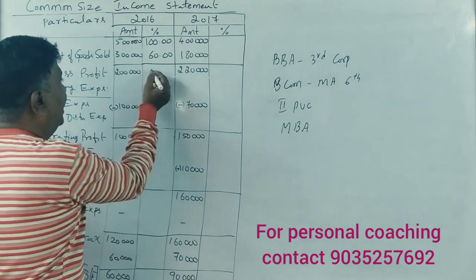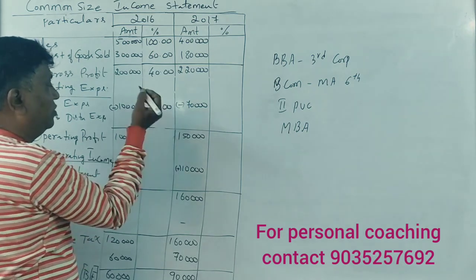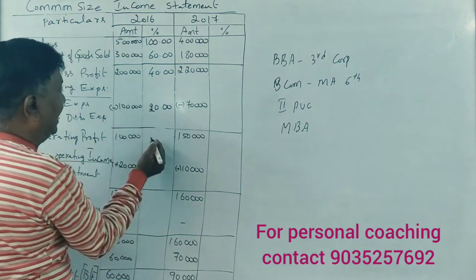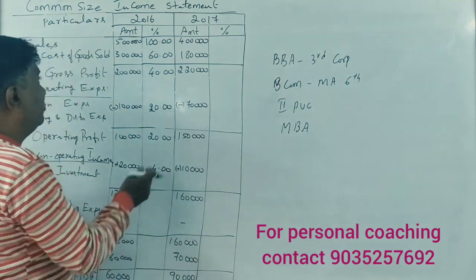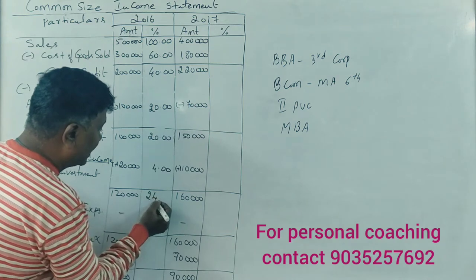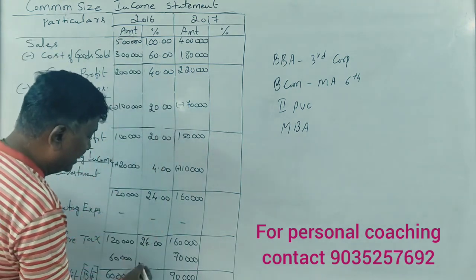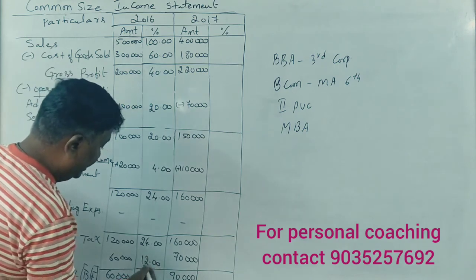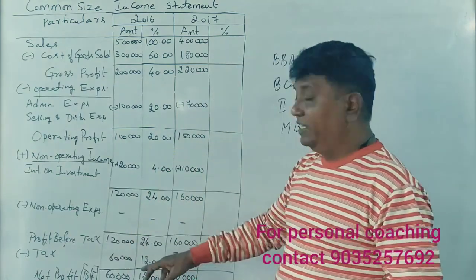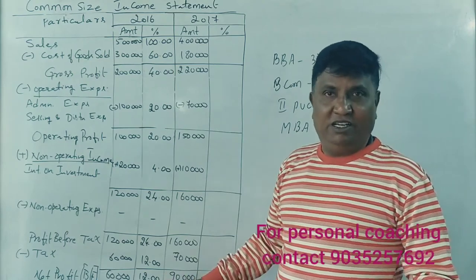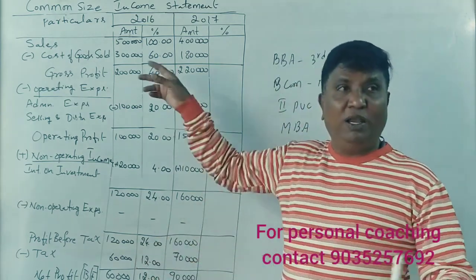For 2016, calculations are divided by 5 lakhs into 100%. 1 lakh 20 divided by 5 lakhs gives 24%. 60,000 divided by 5 lakhs into 100% gives 12%. The net profit is 12% of sales — tax 60,000 is 12% of sales.